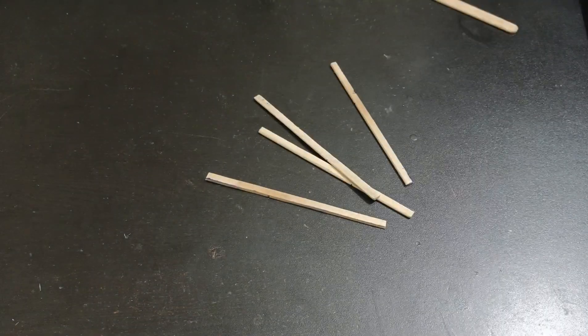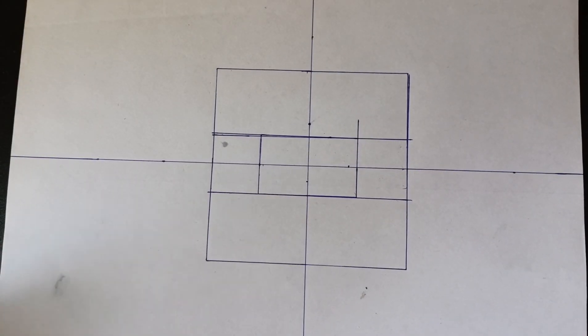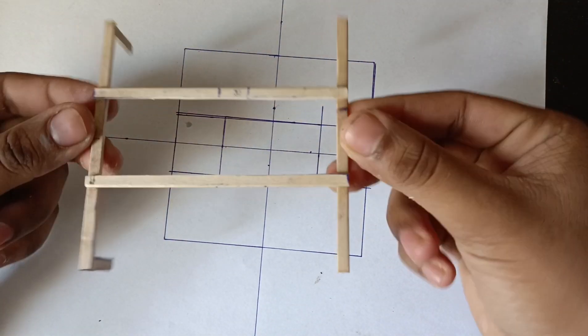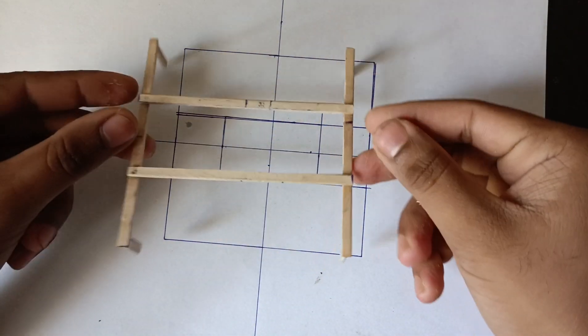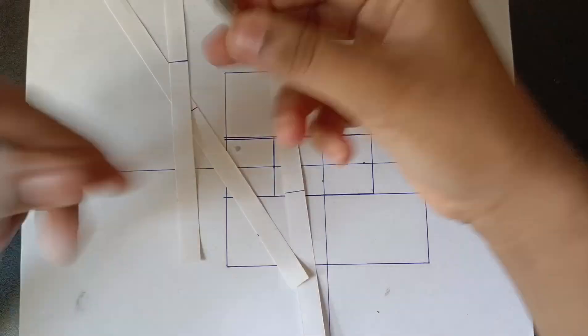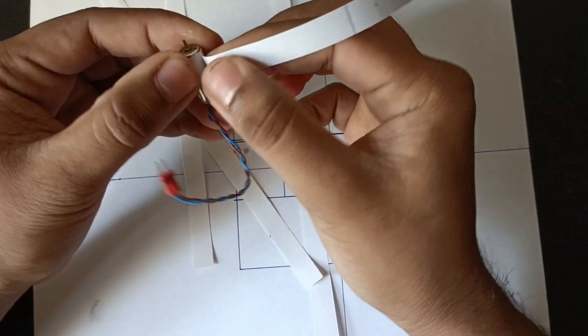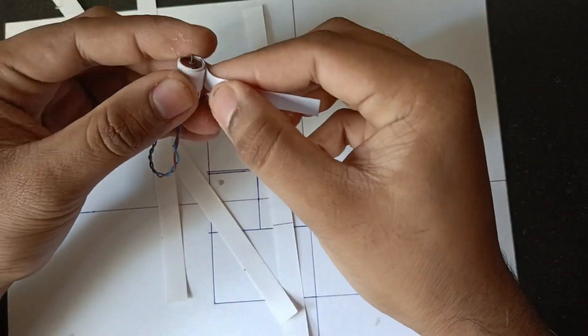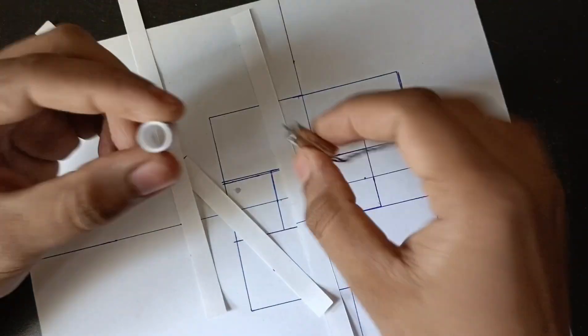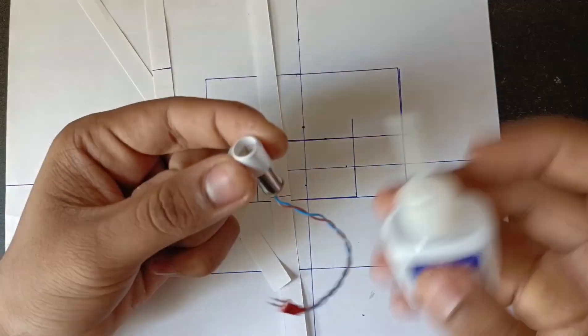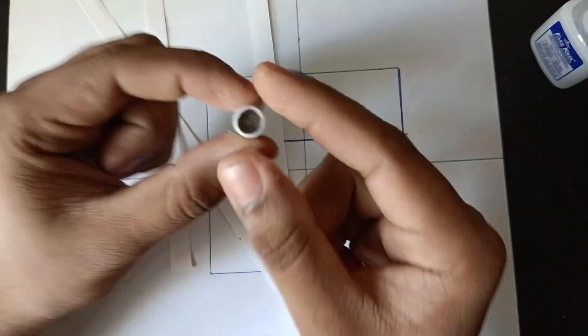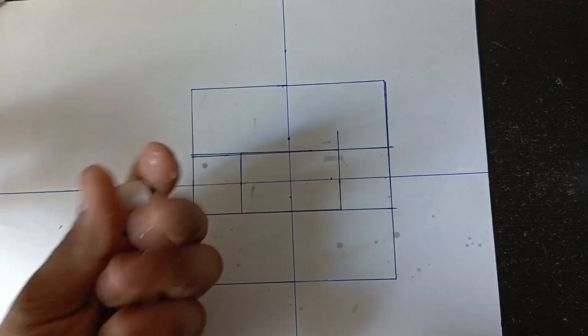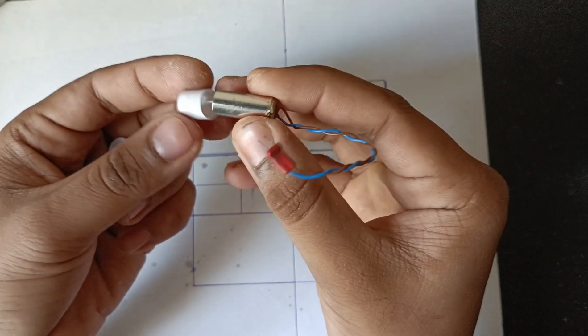To make the frame, I'm using lightweight popsicle sticks. To make the motor holders, I've used paper strips and rolled them over the motor. We will need four of them, and the motor should fit tight enough.